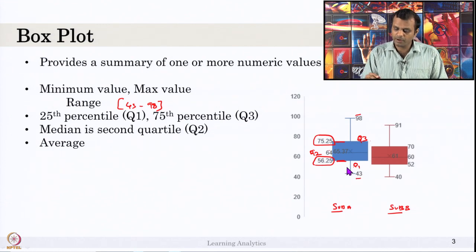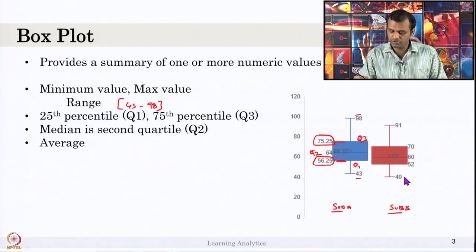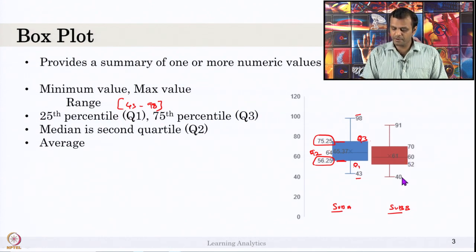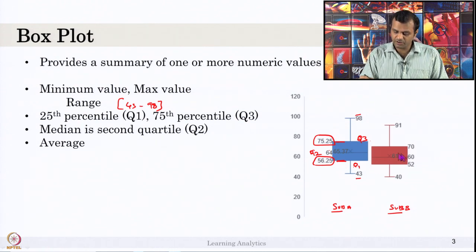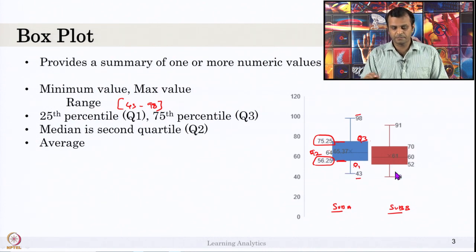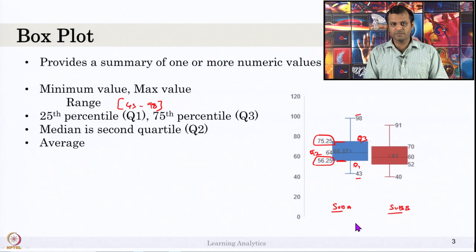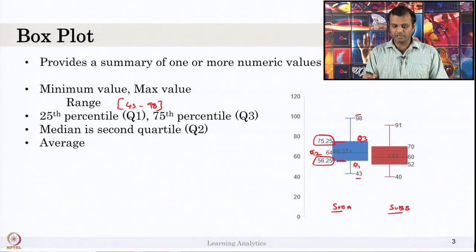We can use the same box plot to compare the marks in a second subject. For the same set of students, the marks in the second subject can be viewed here. The marks are almost similar — 40 is the minimum and 91 is the maximum — and the values 52, 56, 70, 75 are comparable. So the performance in subject A and subject B is equal. You can also use the box plot to compare the performance of two classes — say class A and class B — conduct a test, plot the marks, and compare why one class is doing better or not.